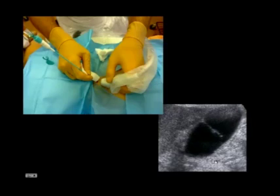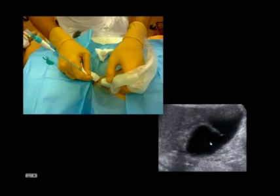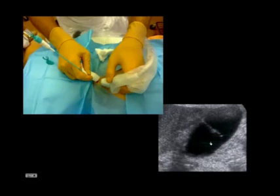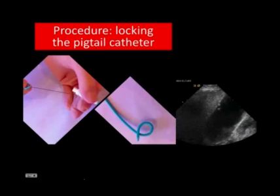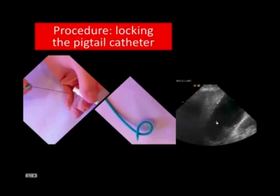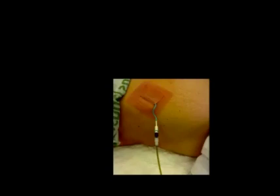Sometimes the gallbladder wall gives an elastic and persistent resistance to catheterization. This resistance must be overcome with the right amount of force, taking care not to puncture the opposite wall. Once the catheter is in place and the metal stiffening cannula is removed, by pulling the wire the coil is locked. The catheter with the locked coil is then gently pulled to allow the gallbladder to firmly adhere to the liver surface, preventing bile leakage through the insertion hole. The bile can be aspirated by syringe or connected to a collecting bag, while maintaining gentle traction to minimize mobility of the gallbladder.